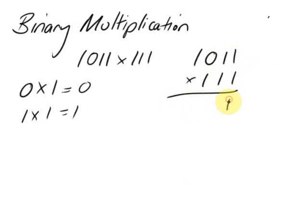So 1 times 1 is 1, 1 times 1 here is 1, 1 times 0 is 0, and 1 times 1 is 1. No surprises so far.